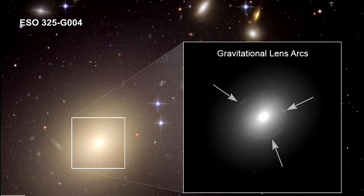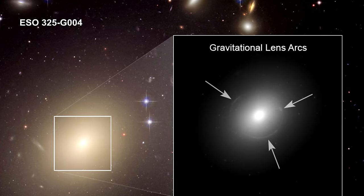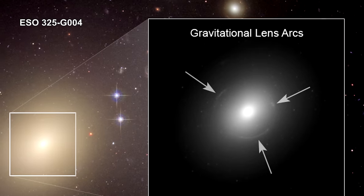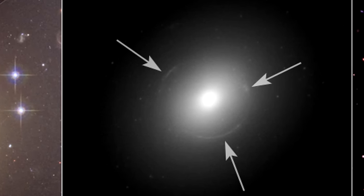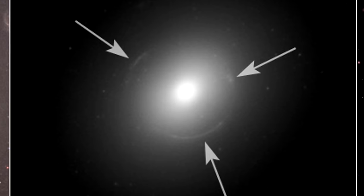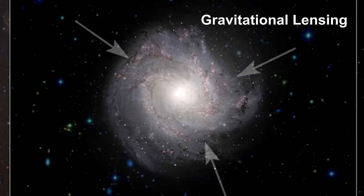You'll remember the Einstein ring we saw around ESO 325-G004 in our segment on local superclusters. The ring was the image of a more distant galaxy. The arc shape was created by the bending of the background galaxy's light by the gravity of the massive foreground galaxy. The process is called gravitational lensing because the mass behaves just like an optical lens.